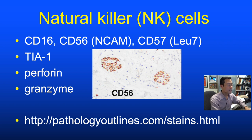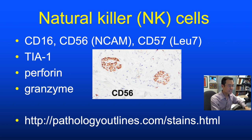NK and T/NK lymphomas are rare but do occur in the skin. Markers include CD56 (neural cell adhesion molecule), which normally highlights nerve fibers in normal skin, as well as cytotoxic markers TIA1, perforin, and granzyme. For the full list of CD markers and special stains, pathologyoutlines.com is an excellent, free, well-referenced online resource with no conflicts of interest.